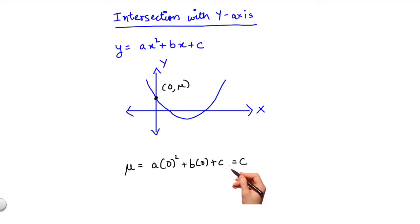Therefore, the point of intersection with the y-axis of a parabola is nothing but the constant term c.